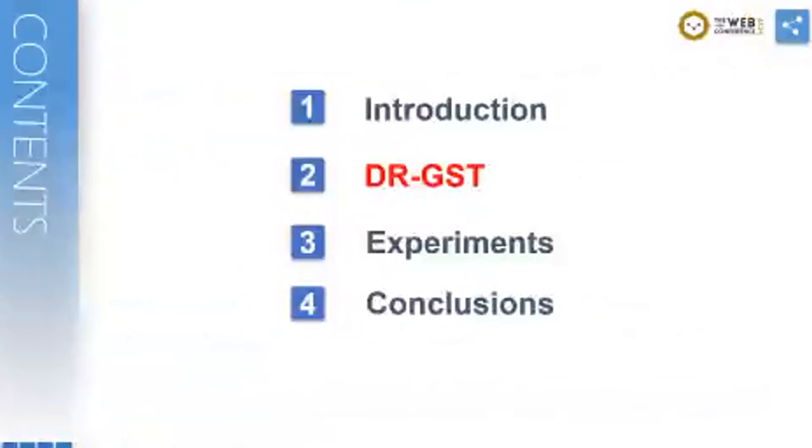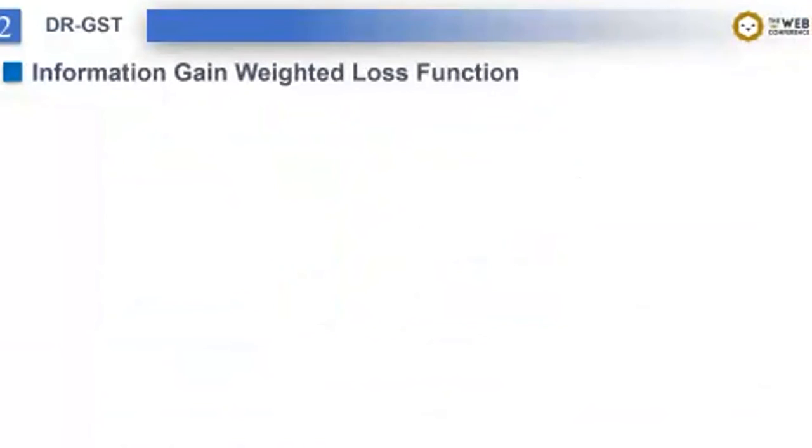Such a distribution shift could be understood as a feature bias introduced by self-training. So next, we will propose our method, DR-GST, to handle the distribution shift.